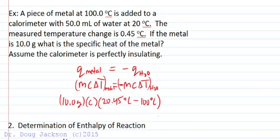So the final temperature of the water is 20.45, final temperature of the metal is also 20.45 because they're all in the same equilibrated system. But the initial temperature of the metal was different than the water, so we have to say minus the initial minus 100 degrees.